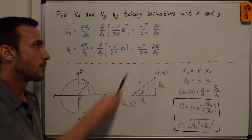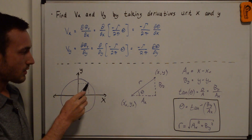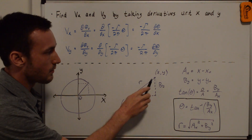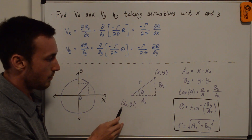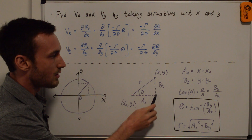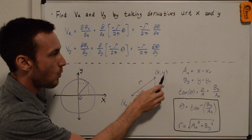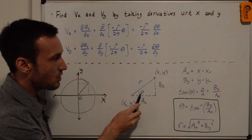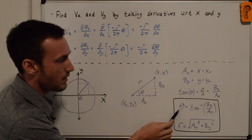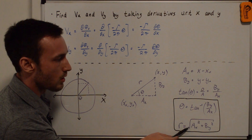First we need to know what theta is in order to compute these partial derivatives. Looking at the x-y coordinate system with a line from the origin — the vortex center — out to some arbitrary point, the distance from the origin (x_0, y_0) to that point is r. The x distance is a_x = x minus x_0, and the y distance is b_y = y minus y_0. The tangent of theta equals the opposite over adjacent, so b_y over a_x, meaning theta equals the inverse tangent of b_y over a_x. And r equals the square root of a_x squared plus b_y squared.